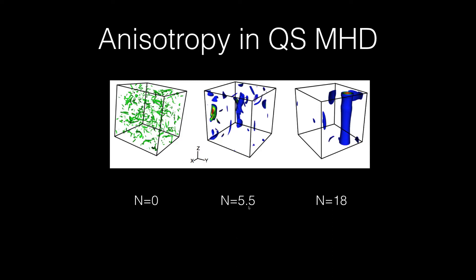But for large N, for 5.5, 18, it is anisotropic. The anisotropy increases with the increase of N, which is clear from the strong vortices appearing in the series.